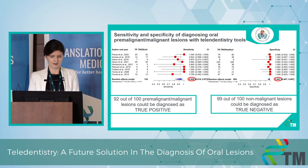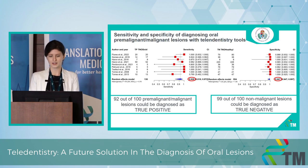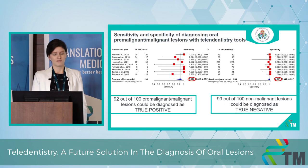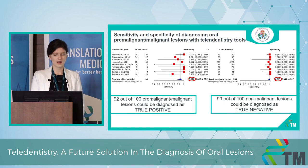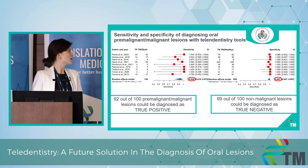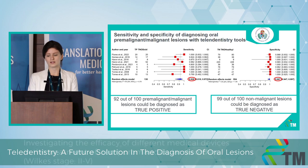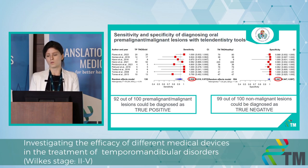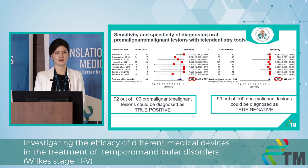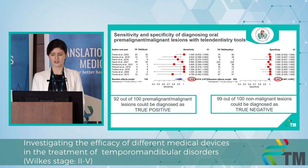This data can be shown in the one-dimensional forest plot analysis as well, meaning that if we have 100 premalignant or malignant lesions, 92 are well diagnosed with the teledentistry tools. And also, if I have 100 non-malignant oral lesions, 99 out of them are correctly identified as true negative.